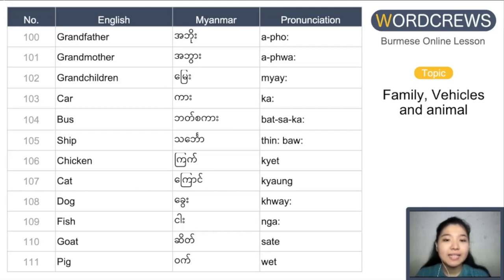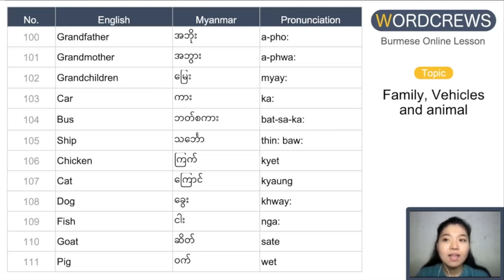Car: ka. Bus: basa ka. Ship: dimbo. Chicken: jet. Cat: jiao. Dog: kui. Fish: nga. Goat: si. Pig: wa. So let's get started.